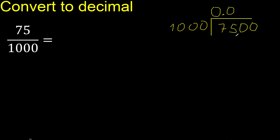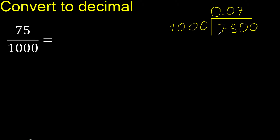00 is not less, therefore find which number multiplied by 1000 is nearest to 7500 but not greater. Multiplied by 8 is 8000 — that is greater. Multiplied by 7 is 7000. Subtract. There is no remainder, therefore complete — always complete with 0.